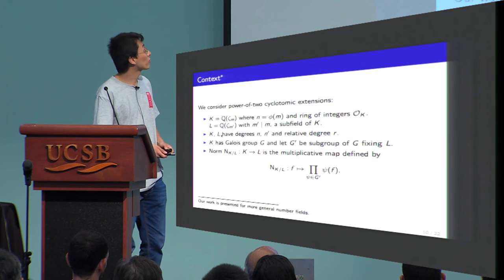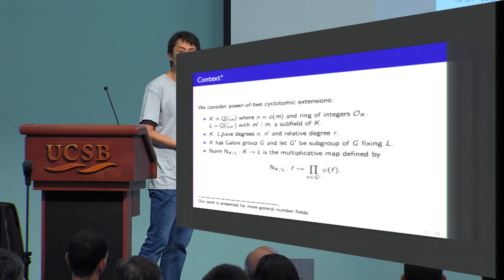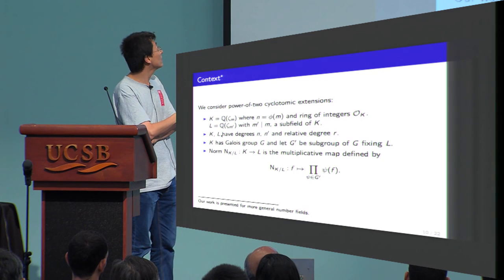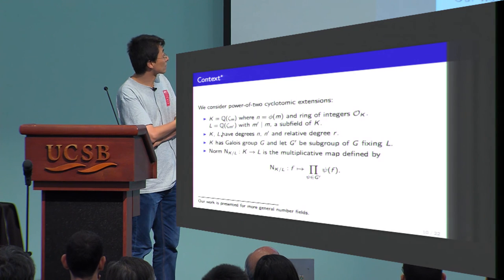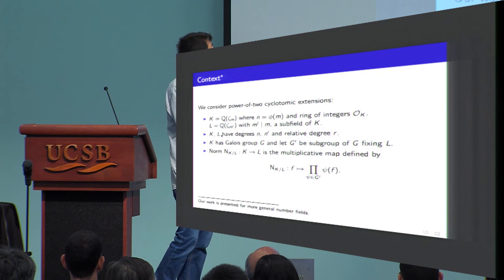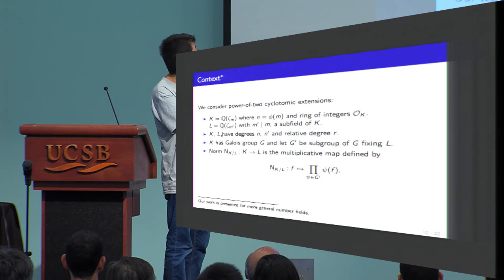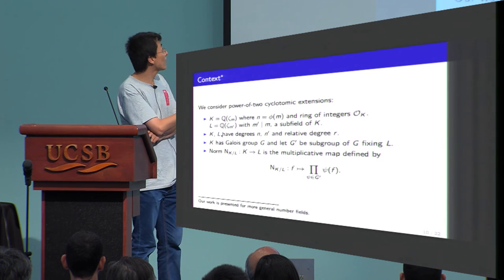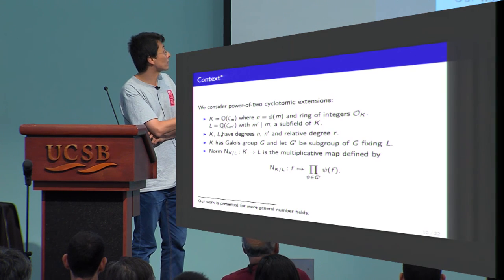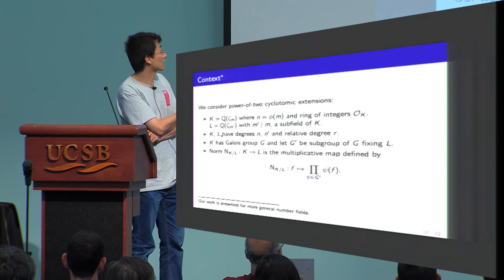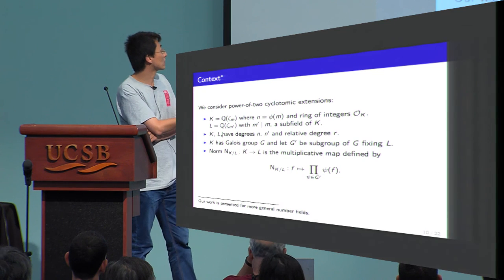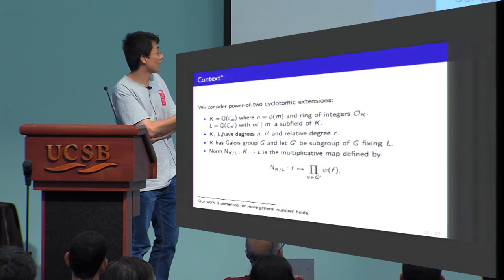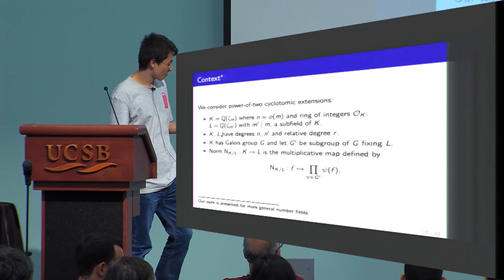For the context of this attack, I will only consider power-of-two cyclotomics in this talk, though the work is presented for more general number fields in our paper. We have the full field K, a cyclotomic extension where N is the rank of the field, and we denote the ring of integers as O_K. Let L be a subfield of K with O_L its ring of integers. Suppose K and L have degrees N and N', with relative degree R. K has a Galois group G and we let G' be the subgroup fixing subfield L. One key tool we use is the norm map, which is a multiplicative map defined by the product of all conjugates of element f, where conjugates are restricted to this subgroup.